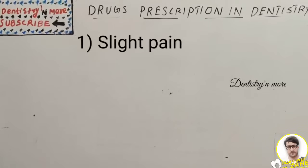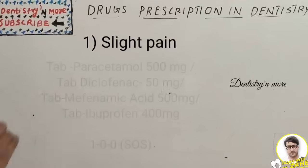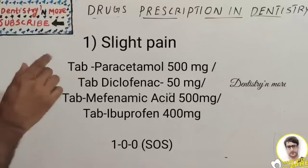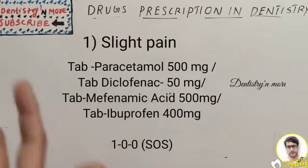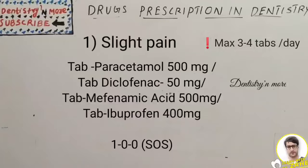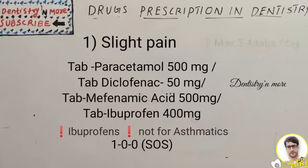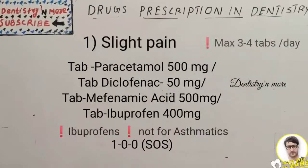In the first scenario, the patient comes with minimal, intermittent pain — no significant diurnal or postural variation. In such cases, give a simple paracetamol 500 mg on an SOS basis, whenever needed, not exceeding three to four tablets per day with a minimum gap of six hours. Alternatives include diclofenac 50 mg, mefenamic acid 500 mg, or ibuprofen 400 mg.